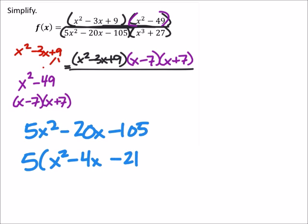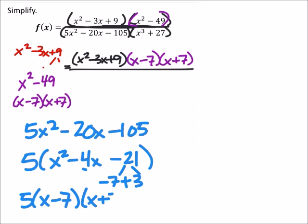And 21... two factors of 21, 7 and 3, seem like it would work with the negative 7 and positive 3. So if I multiply those together I would get the negative 21, and when I add them I get this negative 4 in the middle. So from that I got 5(x - 7)(x + 3), which I'm writing in the fraction.